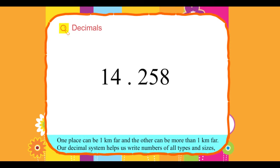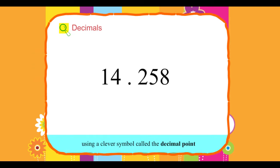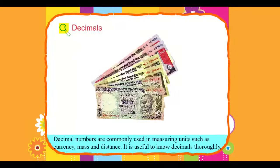Our decimal system helps us write numbers of all types and sizes using a clever symbol called the decimal point. Decimal numbers are commonly used in measuring units such as currency, mass and distance.